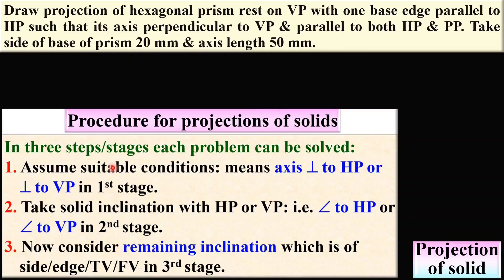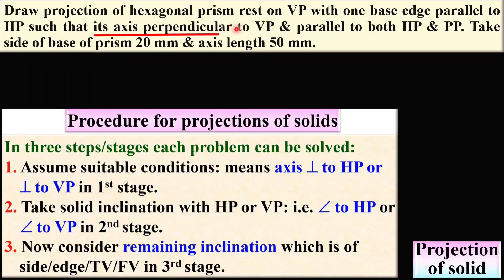Once again we are going to follow the simple procedure for the projection of a solid. If you want to refer to these three stages with the help of an example, you can refer to my earlier video on the procedure for the projection of a solid. In the first stage, you have to assume the axis either perpendicular to HP or perpendicular to VP — and here it is given: the axis is perpendicular to VP.